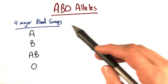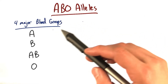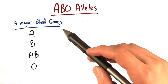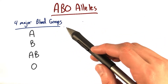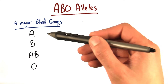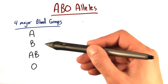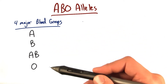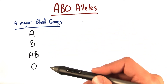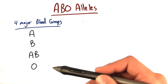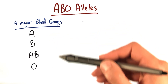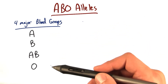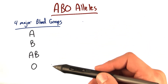At the beginning of this lesson, we learned that there are four major ABO blood groups: blood group A, B, AB, and O. We saw the breakdown of these blood type groups in the US population.